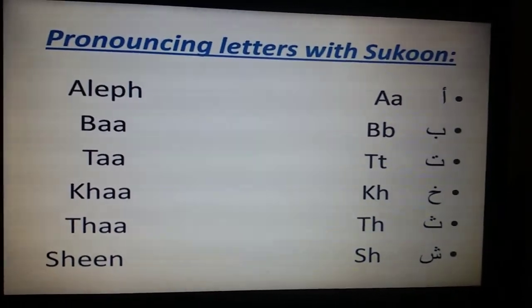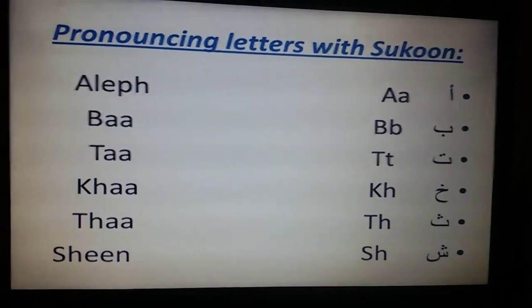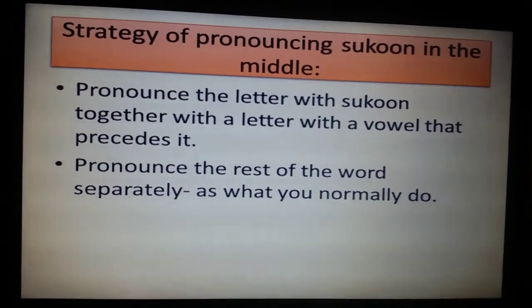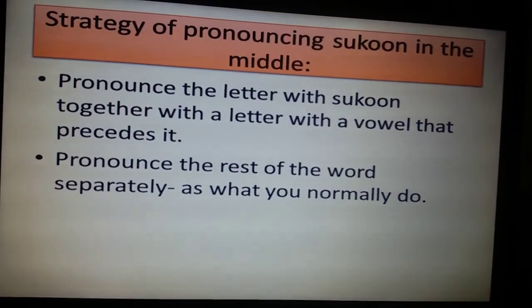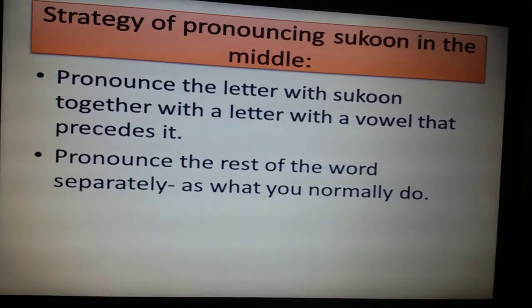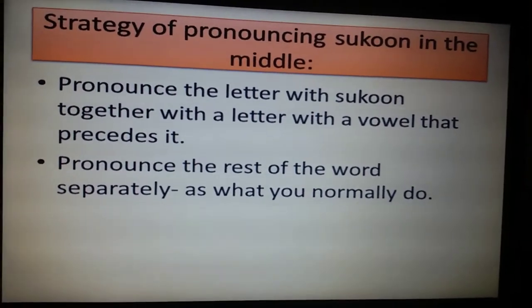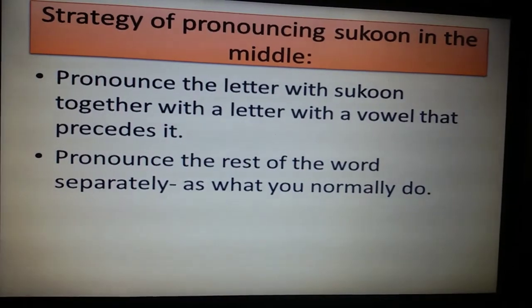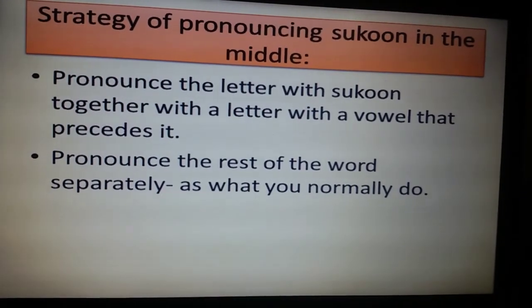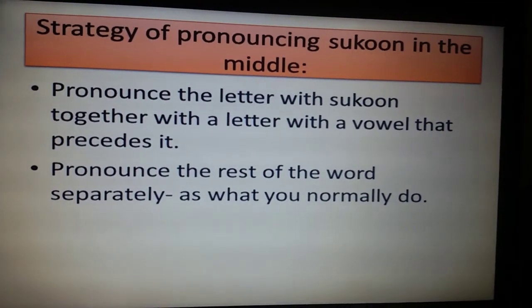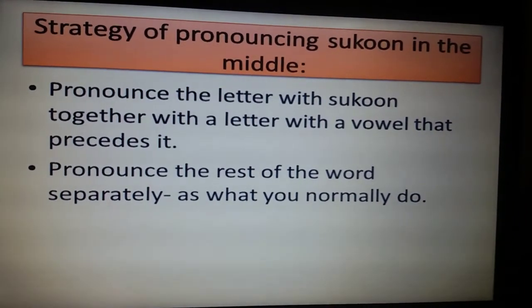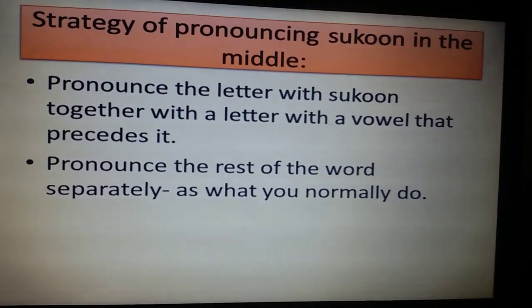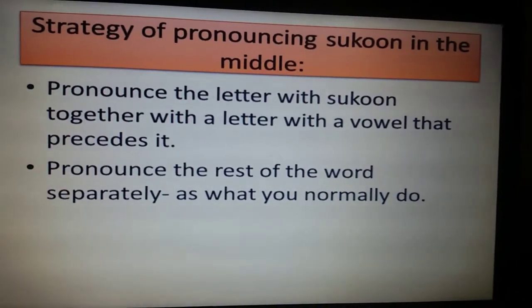After I reminded you how to pronounce the letters individually in the silent form, now we will put them into words in the middle. The strategy for pronouncing the Sukun in the middle is: we pronounce the letter with the Sukun together with the letter that precedes it — the letter with a vowel. Since a letter with a Sukun is difficult to pronounce individually, we combine it with the preceding voweled letter. For example, alif with a fatha: we say 'as' and 'ash', like that, and then pronounce the rest of the word separately.